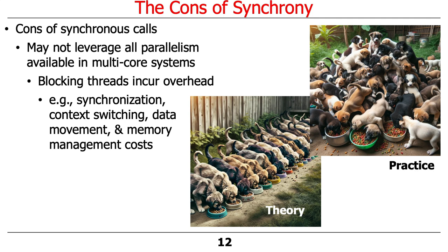I had fun with DALL-E this weekend. I generated a visualization by asking it to generate a group of dogs all eating from their own bowls in a nice, orderly way — that's what you'd like to have happen — and then a scrum of dogs eating out of each other's bowls in a chaotic way. I thought this was a pretty funny visualization of the contrast between the way threads work in theory and the way they work in practice if you're not careful. There can be overheads and complexities when you start trying to use blocking.